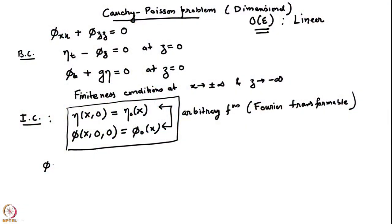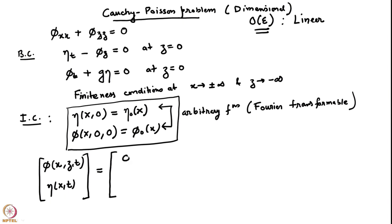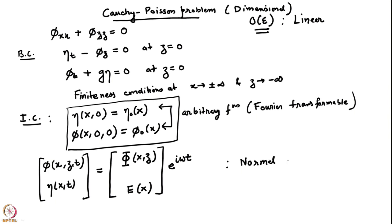Like before, we will first write it in the normal mode form. We expect φ(x,z,t) and η(x,t) — these are my two degrees of freedom, each of them itself a function — to be some eigenfunction Φ which is a function only of space. The eigenfunction for velocity potential is capital Φ and the eigenfunction for η is capital E. E is just a function of x; capital Φ is a function of x and z, times e^(iωt). This would be my normal mode approximation.